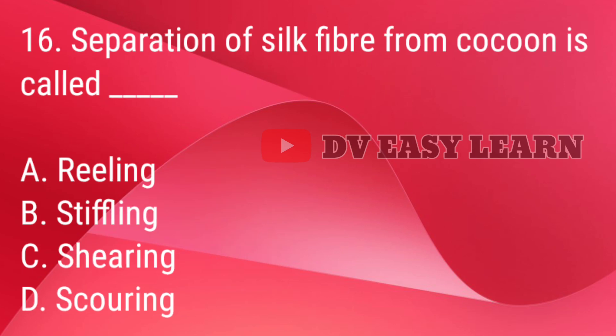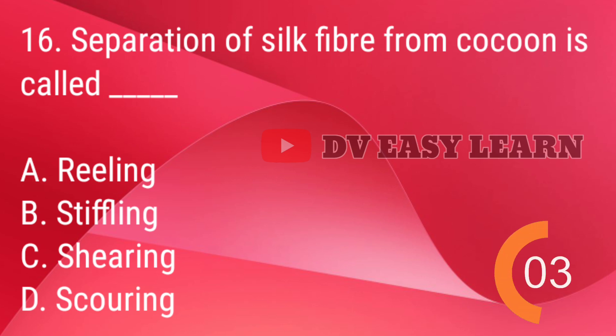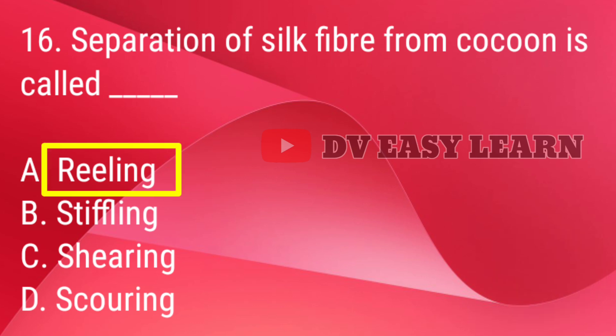Q16. Separation of silk fiber from cocoon is called — correct answer: Reeling.